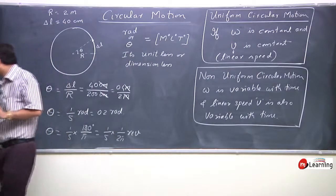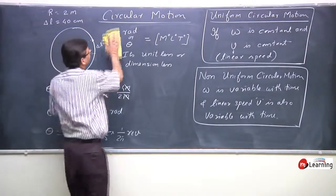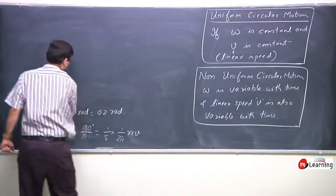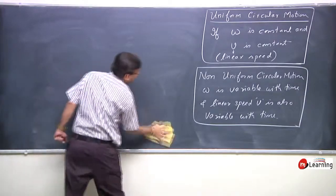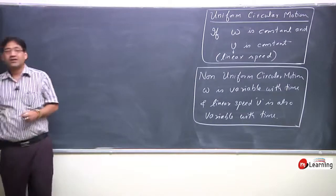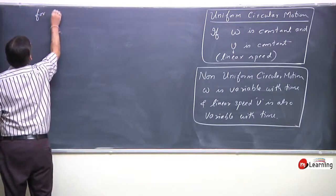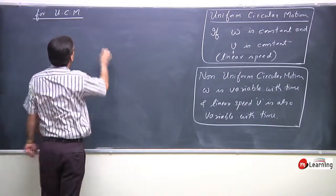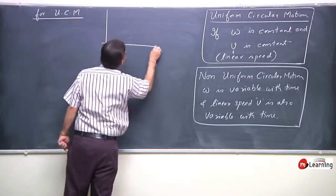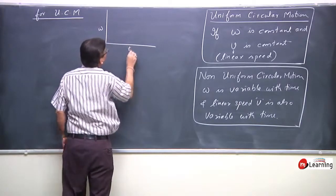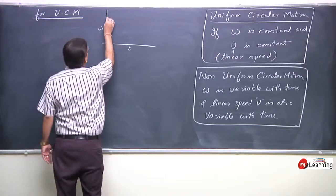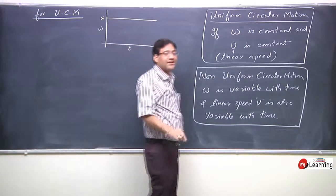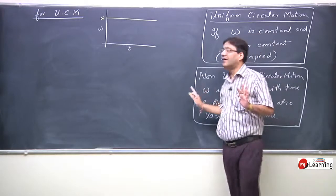मैं पहले Uniform Circular Motion के बारे में graphically इस concept को समझा देता हूँ। For Uniform Circular Motion, if we plot omega with time, this omega would remain constant. Time के साथ बिलकुल भी omega change नहीं हो रहा है।